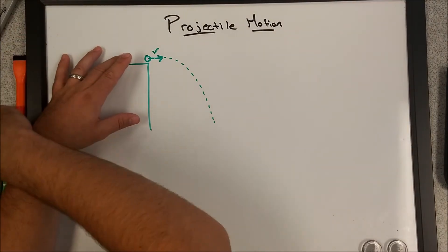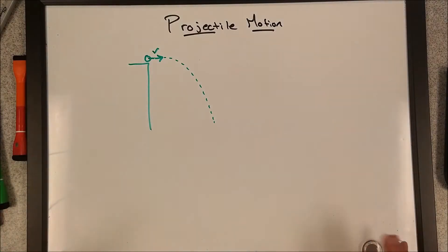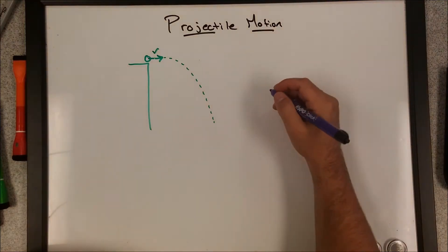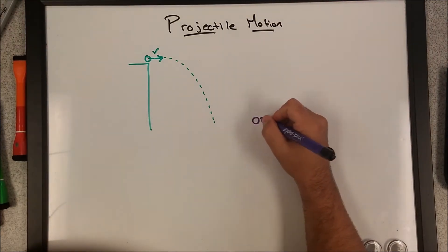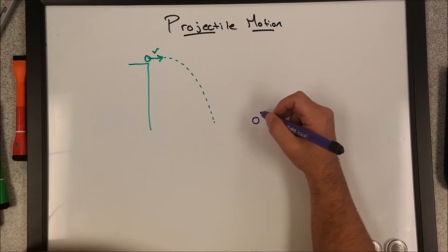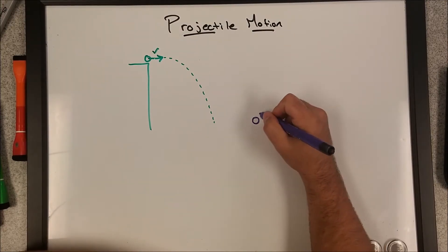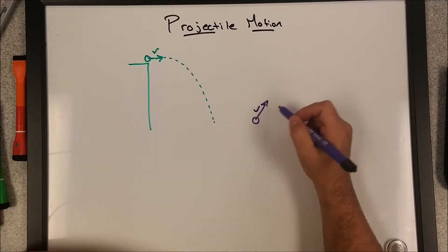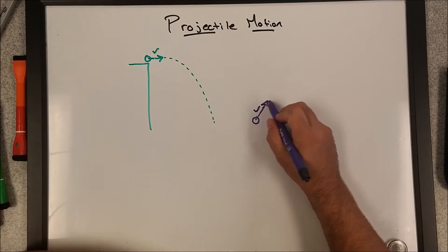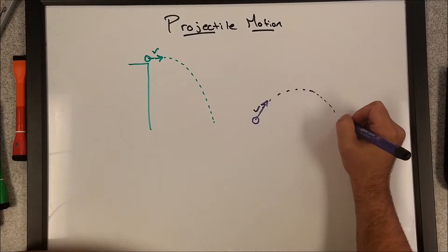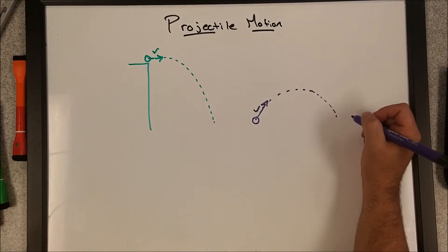The other type is angled projectile motion. An angled projectile motion is one in which the ball or the object has velocity in both dimensions originally — both the vertical and the horizontal. So it would be some velocity at some angle, hence angled projectile motion. And that goes up and then comes back down.